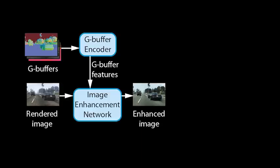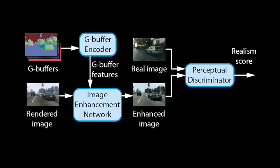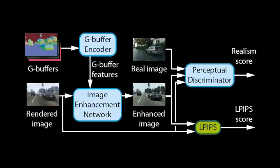To train our networks for enhancing realism, we employ a perceptual discriminator. For each image it takes in, it produces a realism score. To make it understand what the real world looks like, we also feed it real photos. To ensure that our networks retain the structure of rendered images, we further add them to the discriminator inputs and employ a perceptual loss.